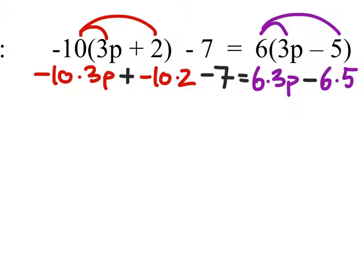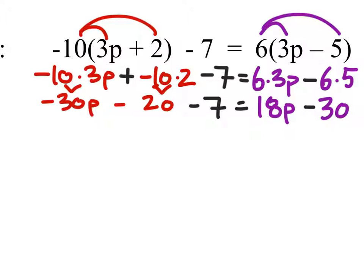So let's go ahead and multiply those together. We have negative 30p minus 20 minus 7 equals 6 times 3p is 18p minus 6 times 5 is 30 there.